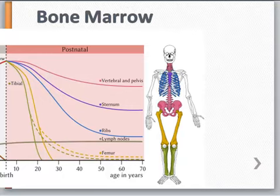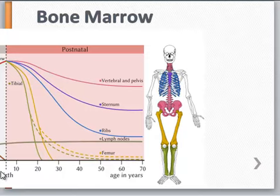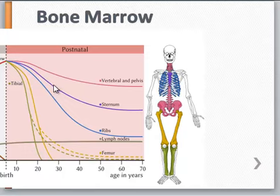There are two types of bone marrow: the active and the inactive bone marrow. The active bone marrow is also known as red bone marrow. The reason it's red is that it has a very high level of vascularity and is highly populated by Hematopoietic cells. The inactive bone marrow is also known as yellow bone marrow, and the reason it's yellow is because of a high infiltration of fat cells.